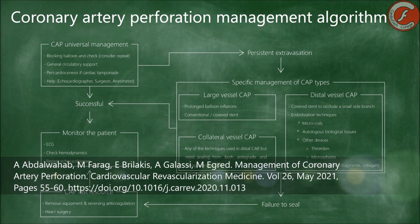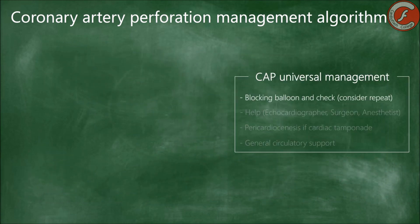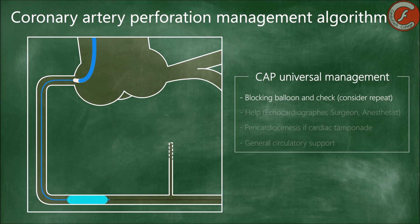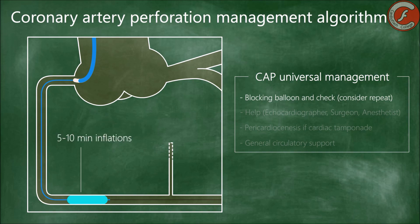The first thing to do after identifying a coronary perforation, regardless of its location or severity, is to inflate an angioplasty balloon proximal to the lesion, guaranteeing a 1-to-1 relationship with respect to the diameter of the vessel, and maintaining an inflation pressure of 8 atmospheres for intervals of approximately 5 to 10 minutes.